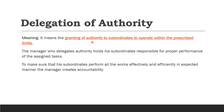Delegation means granting authority to subordinates to operate within prescribed limits. A superior gives authority to a subordinate to perform a task or fulfill a responsibility, but within certain limits. The manager who delegates authority holds his subordinates responsible for proper performance of the assigned task. To make sure subordinates perform effectively, the manager creates accountability — meaning all these people have to report back to the manager on why or why not they were able to complete the job.